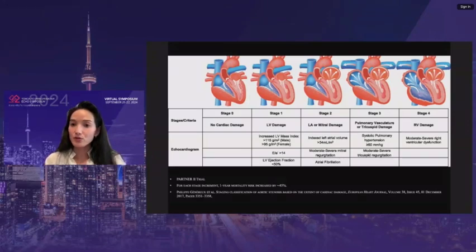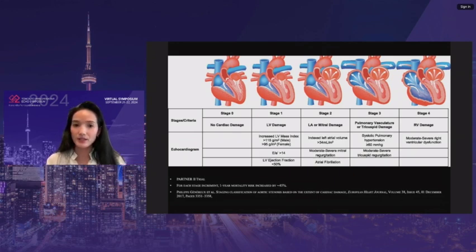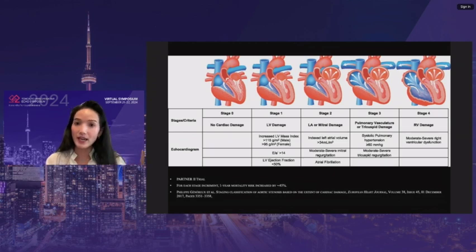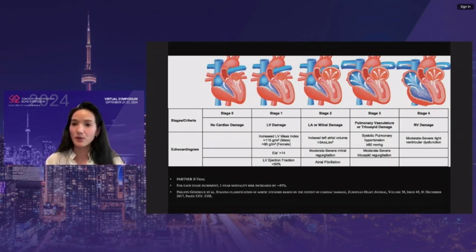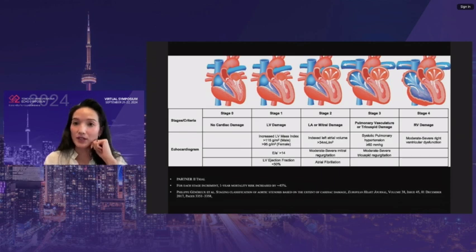This shows that it's really important to assess not just the aortic valve, but the LV, the left atrium, and if possible, mitral valve, TR, and RV dysfunction. If you have RV dysfunction in aortic stenosis, it's usually a very bad prognostic sign.